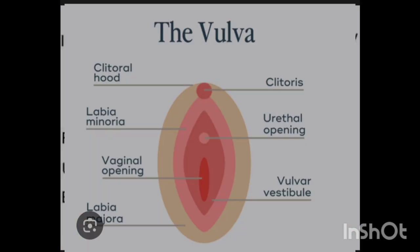Starting with external female genitalia: the female reproductive system is divided into two — internal female genitalia and external female genitalia. The external female genitalia are the structures found outside the body within the perineum. These are composed of labia majora, labia minora, clitoris, vestibule, vestibular glands, vaginal orifice, and hymen.